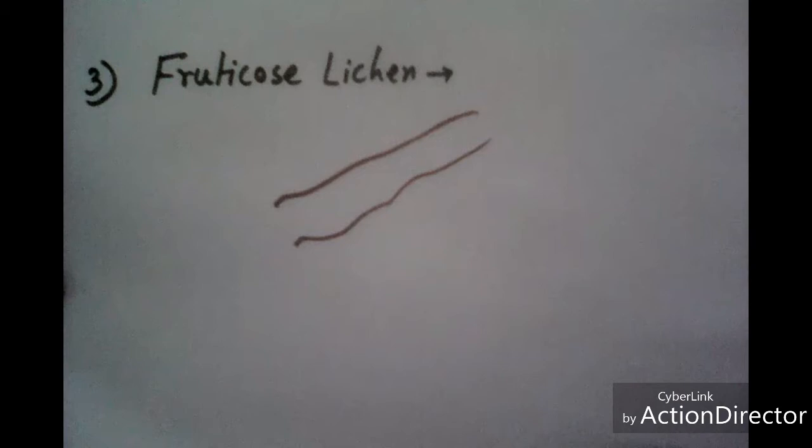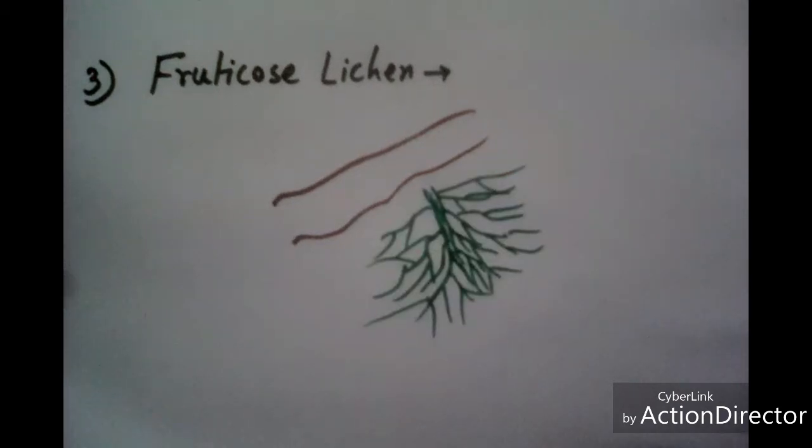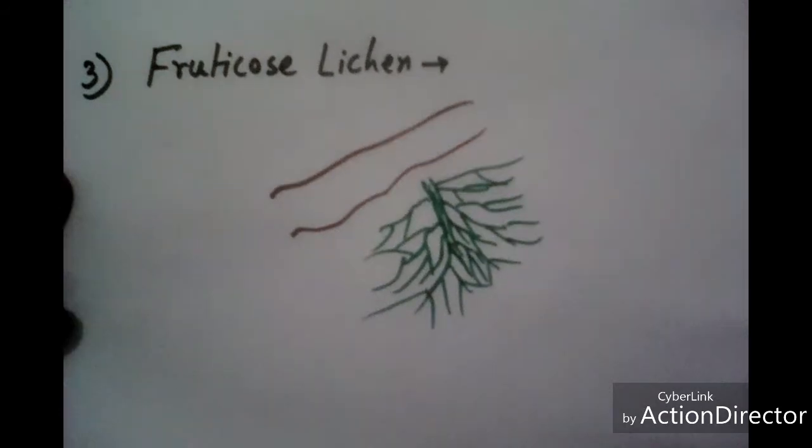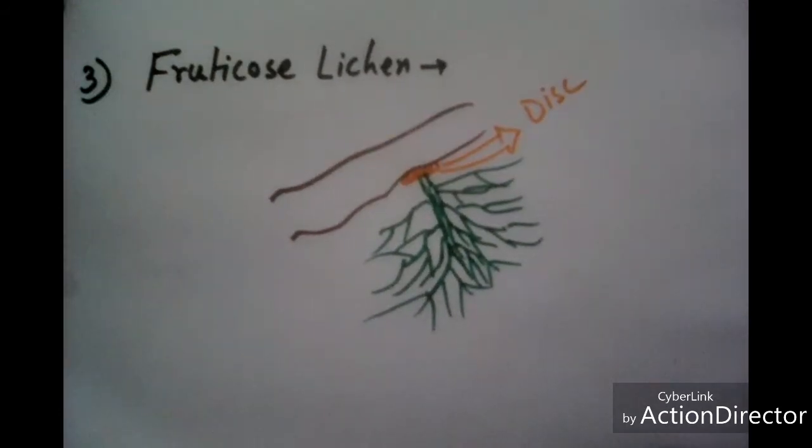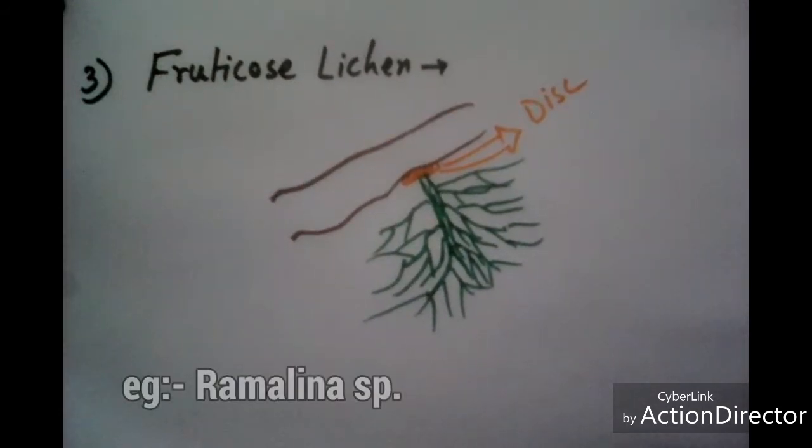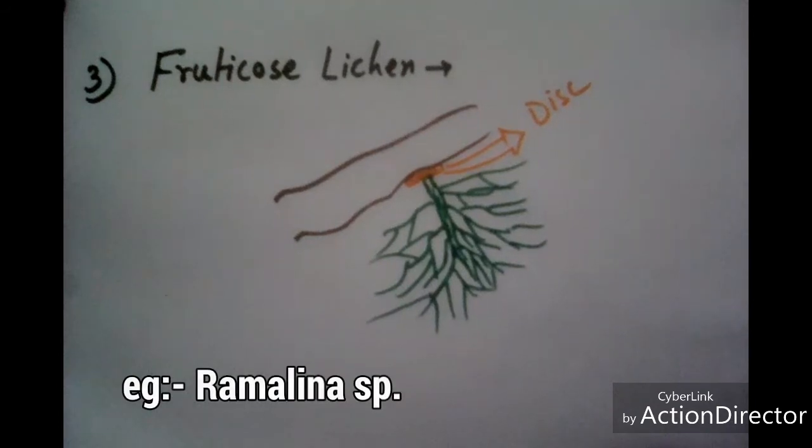At the base they contain disc-like structure and fruticose lichen resembles a little shrub.